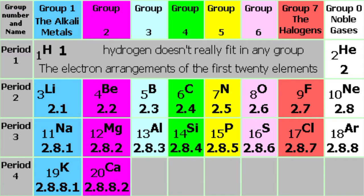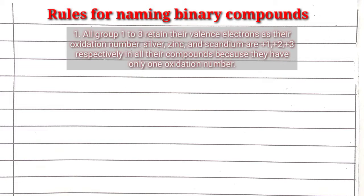We are going to start by getting to know the rules for naming binary compounds. Rule 1: All group 1, 2, and 3 elements retain their valence electrons as their charge, as their oxidation number, and as their valence in any compound they are found.